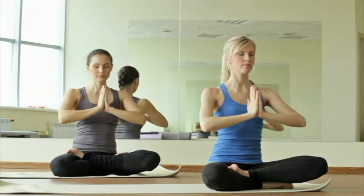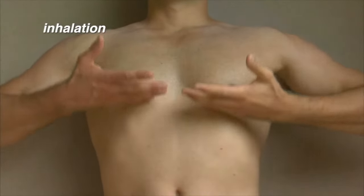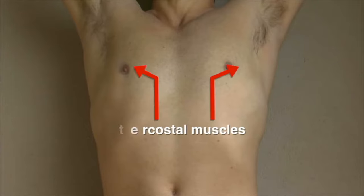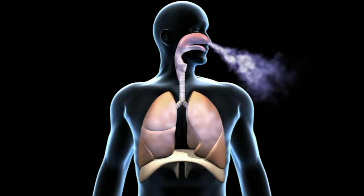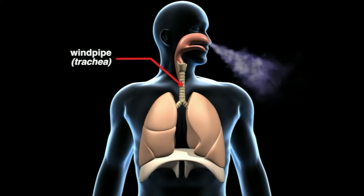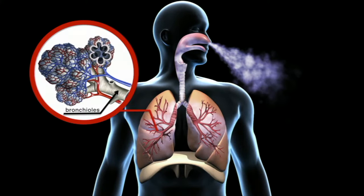Humans breathe with lungs in a constant cycle of inhalation and exhalation. During inhalation, the intercostal muscles, located between each of the ribs, work together with the diaphragm to expand the size of the chest. The diaphragm contracts and moves downward, while the intercostal muscles pull the ribcage upward and outward, expanding the chest cavity. The increase in chest volume decreases internal pressure, so the lungs expand. Air is sucked through the nose and mouth, travels down the throat into the windpipe, or trachea, which divides into bronchial tubes, then into smaller bronchioles, ending in tiny balloon-like sacs called alveoli.